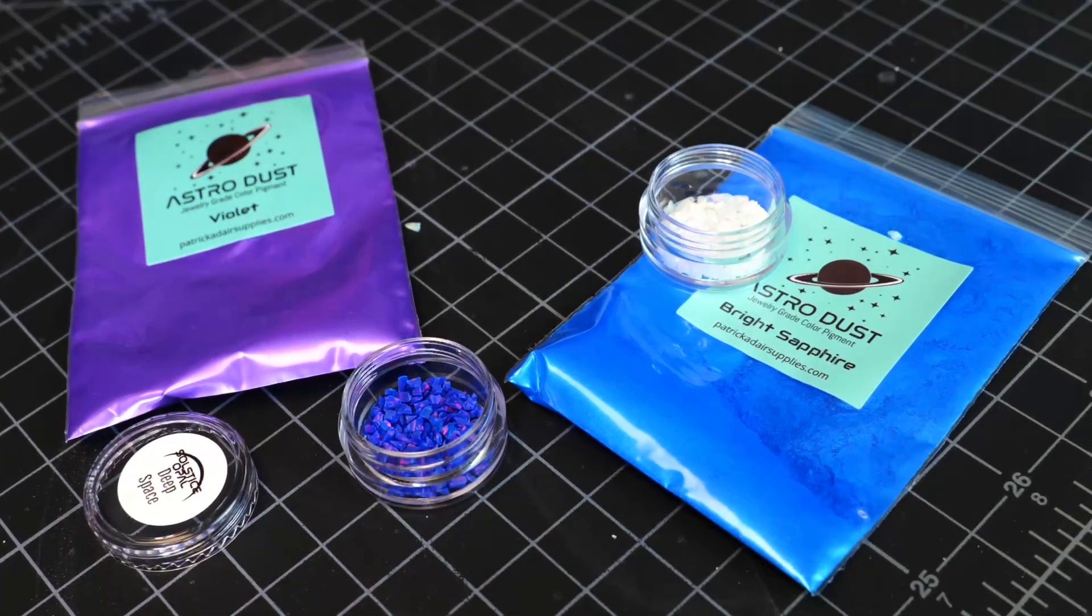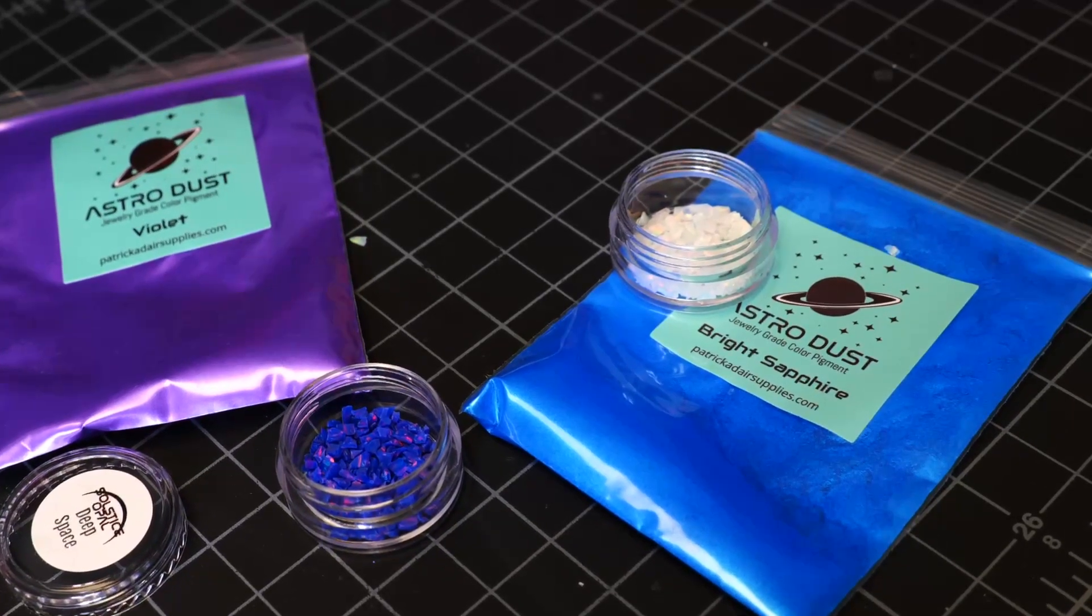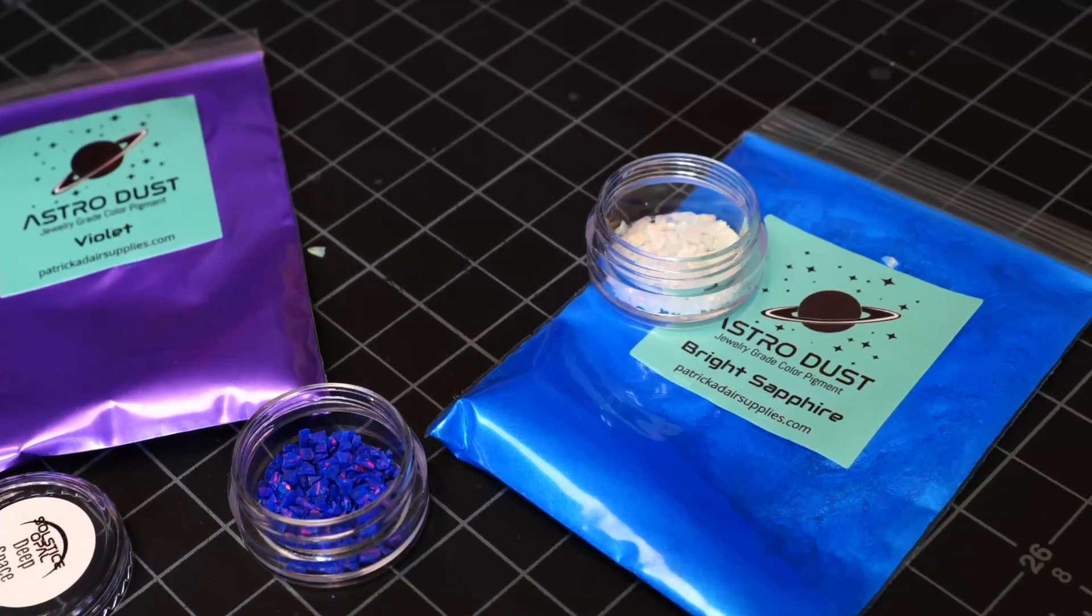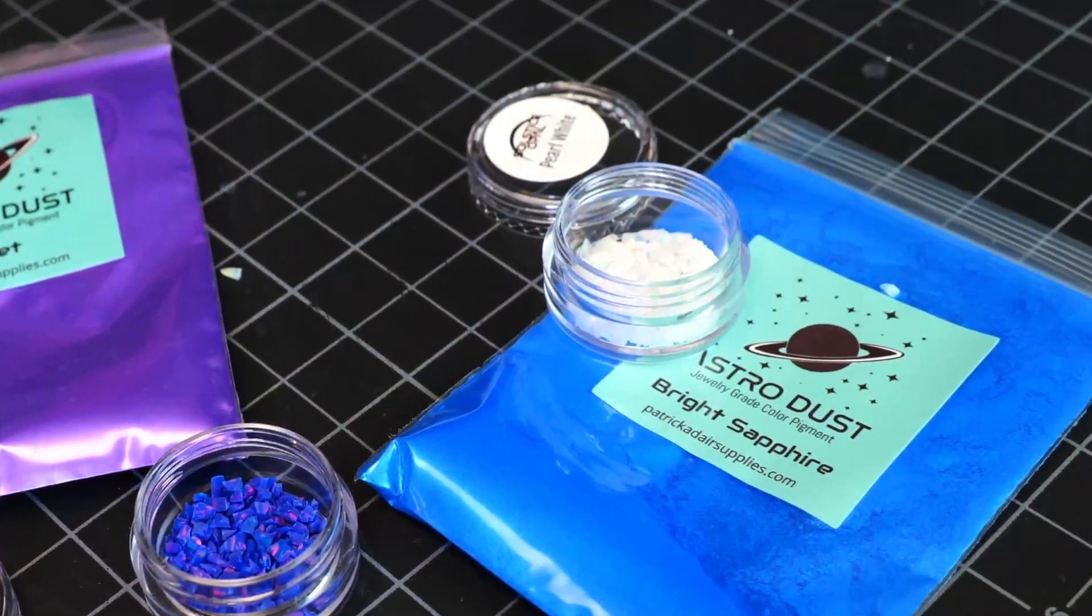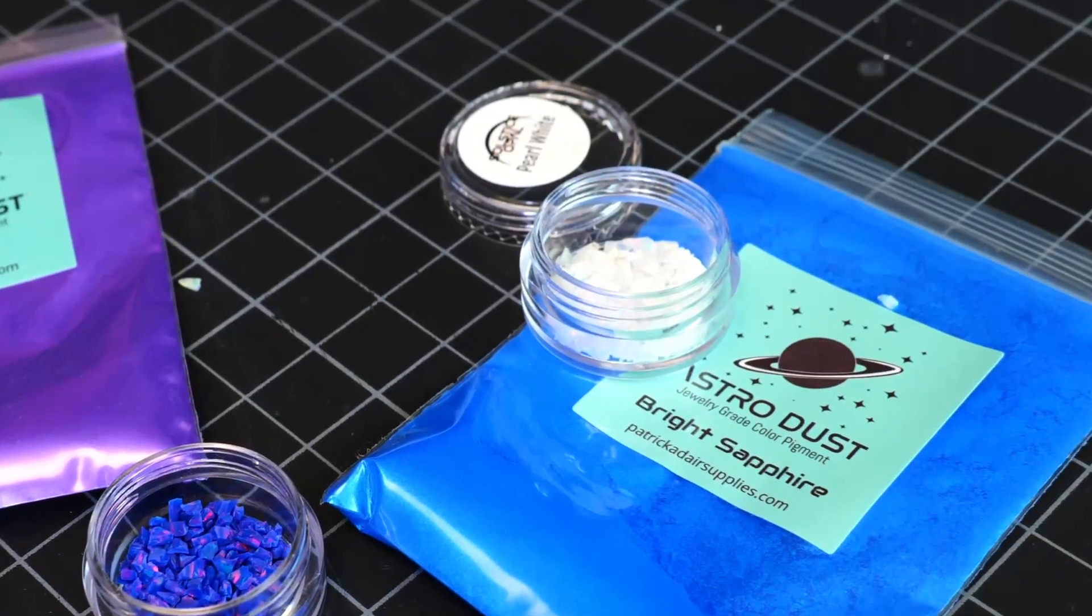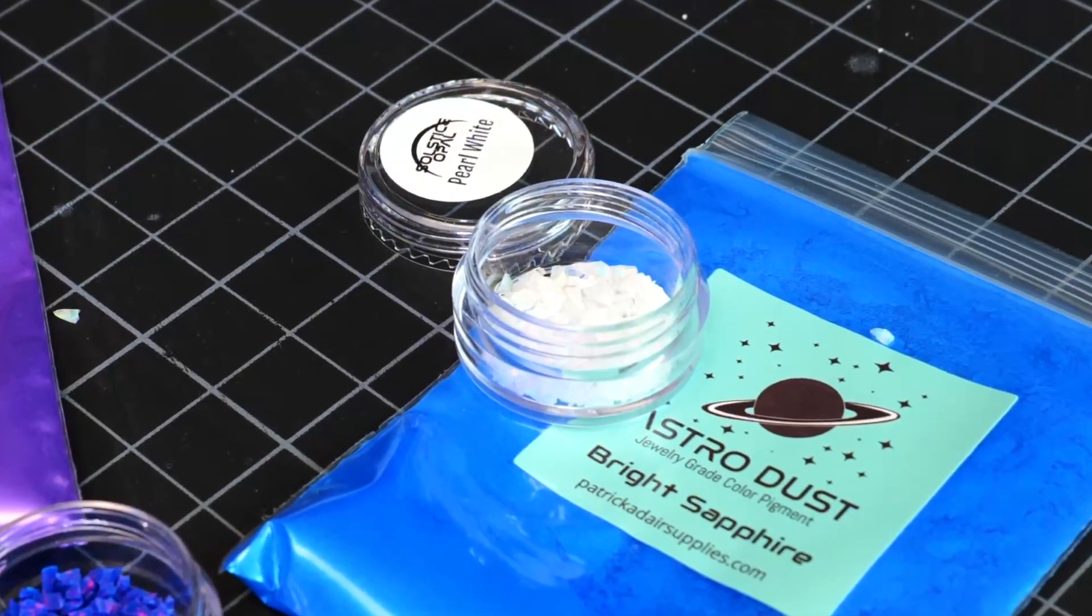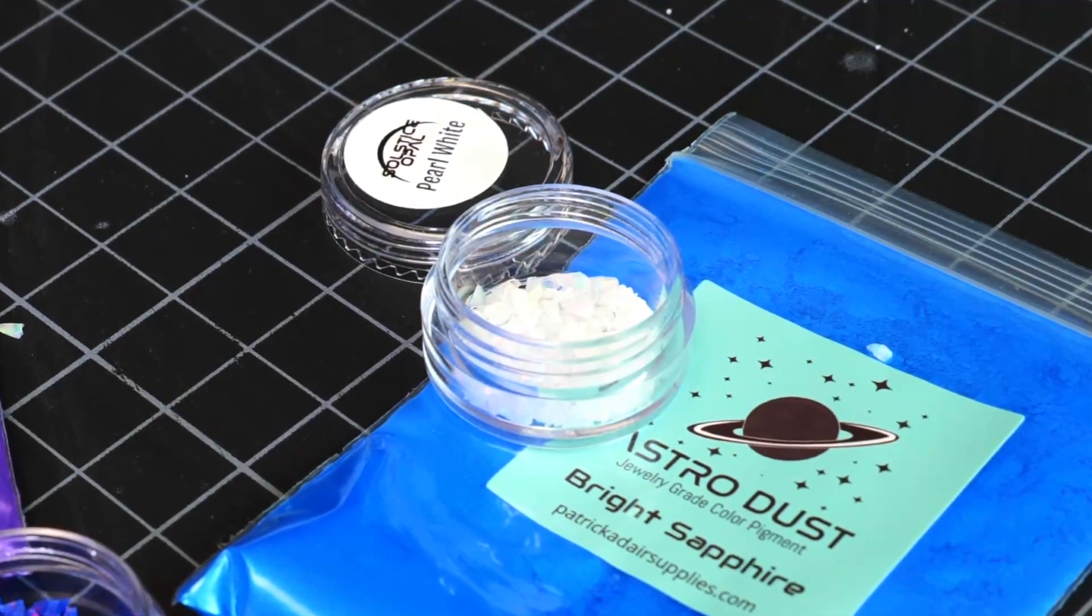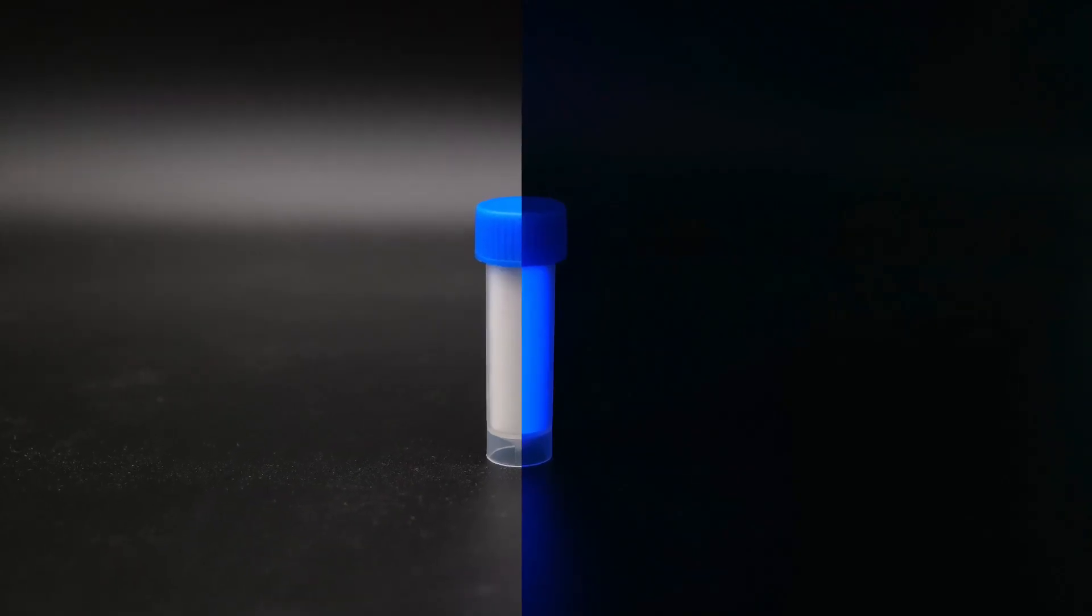Then we have our glacier white opal which is a really kind of muted white. It gives off a very blue color to it. Combined with the purples and the blue of our daytime colors along with the deep space blue opal, it's going to give us a little bit of contrast, add a little bit of white and lightness to our ring. It'll help tie it all together by having a similar color palette. Then we have our blue glow powder. I'm a fan of blue and it glows really nicely. It's one of our brighter glow colors.